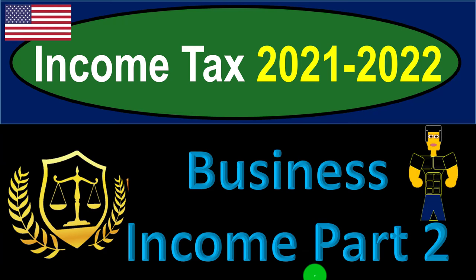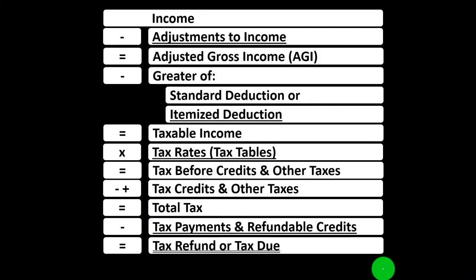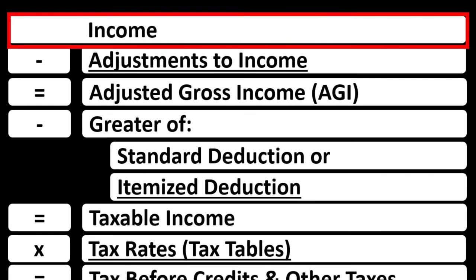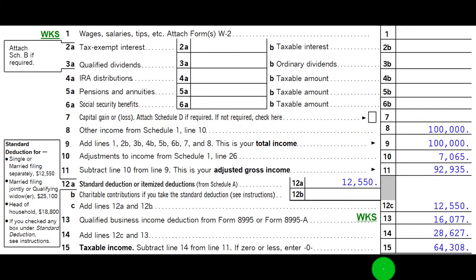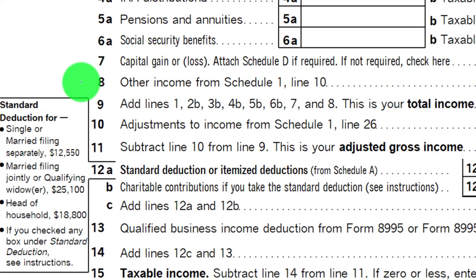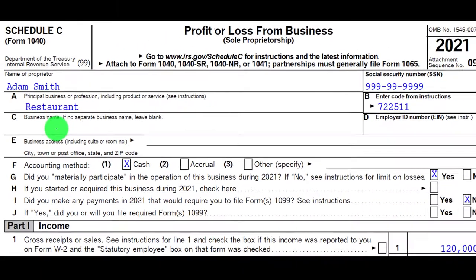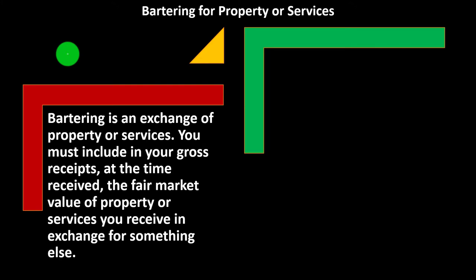Income tax 2021-2022 business income part two. Most of this information can be found in Publication 334, Tax Guide for Small Business 2021. Looking at the income tax formula at line one income, we would have a schedule — basically an income statement with income and expenses flowing into the Schedule C bottom line, then through Schedule 1, and into Form 1040 page one, line eight. We're focused on the top line: the income line.